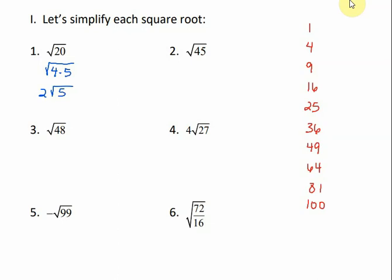For number 2, √45. Take half of the number — half of 45 would be 22 and a half. So that would fall between 16 and 25. Will 16 divide into 45? No. What about 9? Yes, 9 will divide into 45. So that's the biggest perfect square that will go into 45. 9 times 5 is 45. Since 9 is the perfect square, it gets to come out. The square root of 9 is 3, and the 5 stays under.